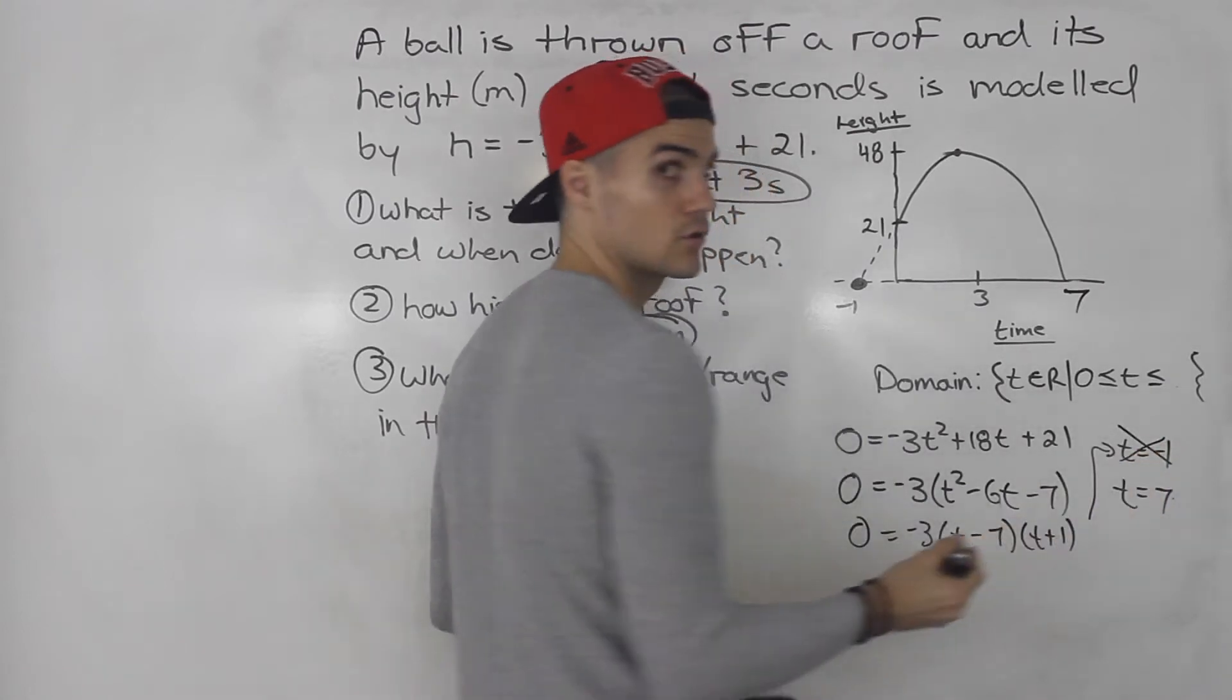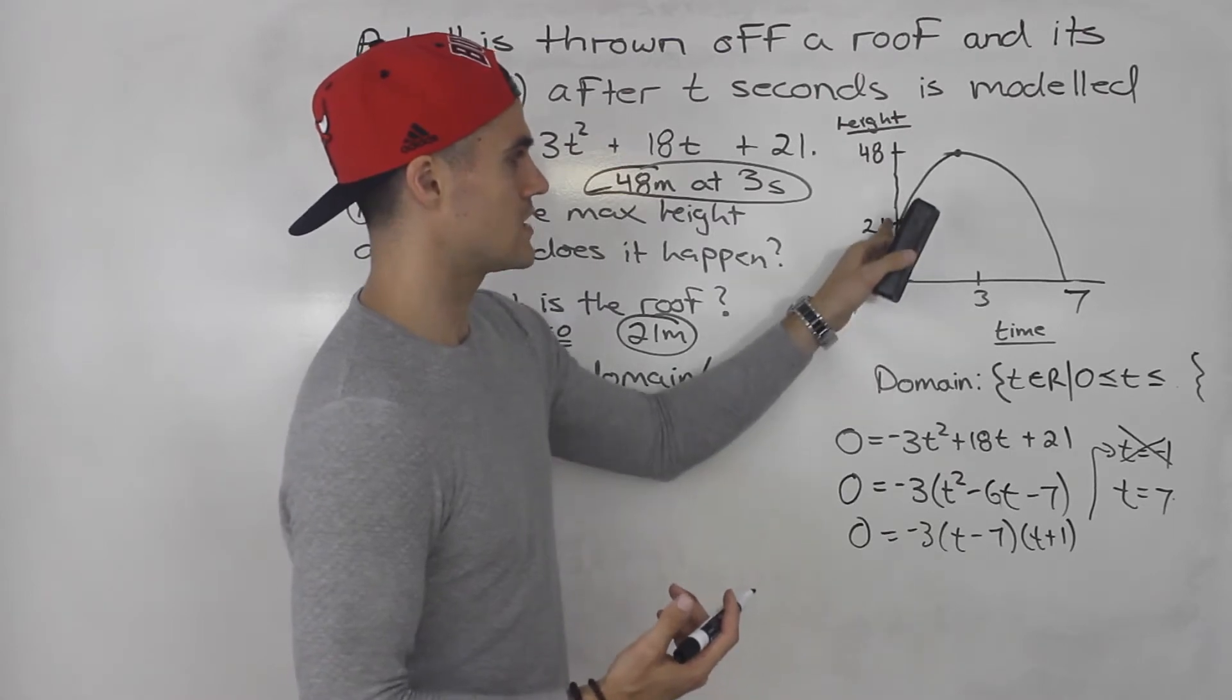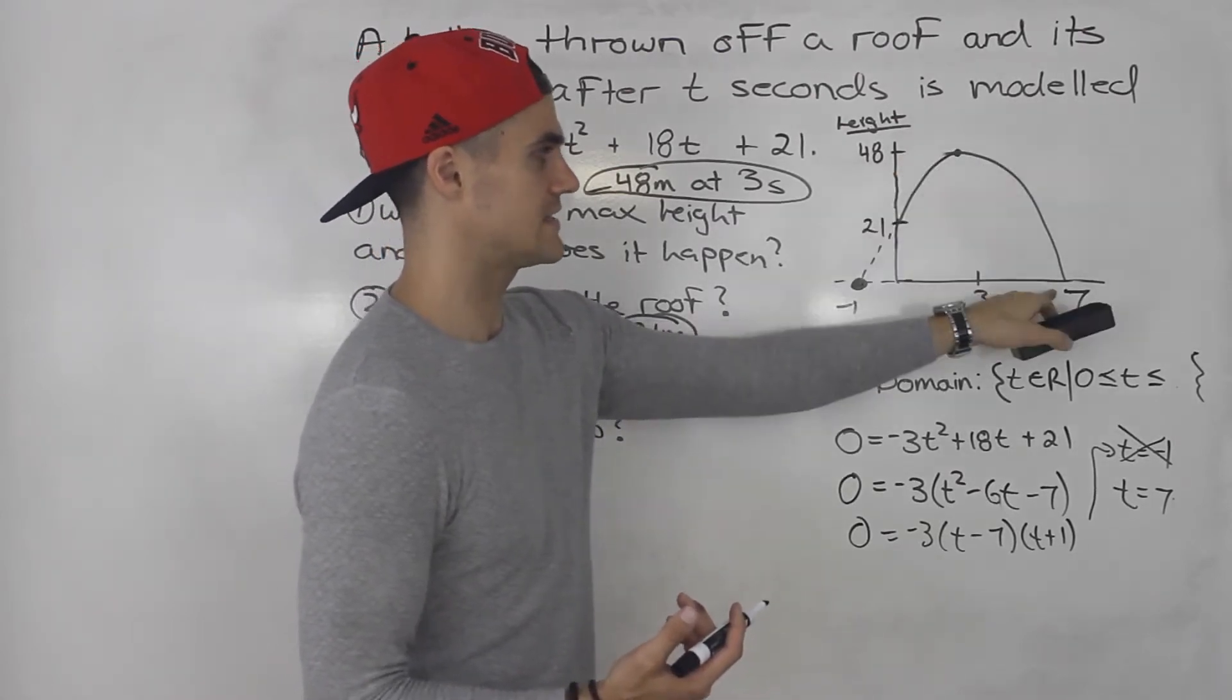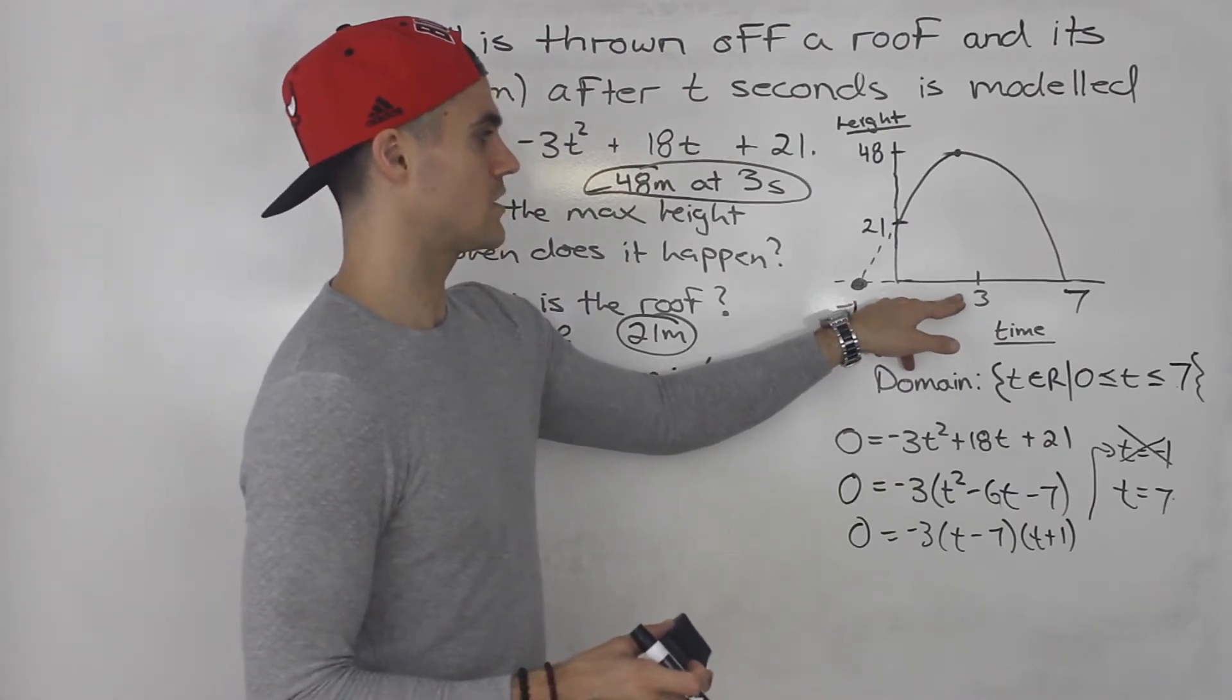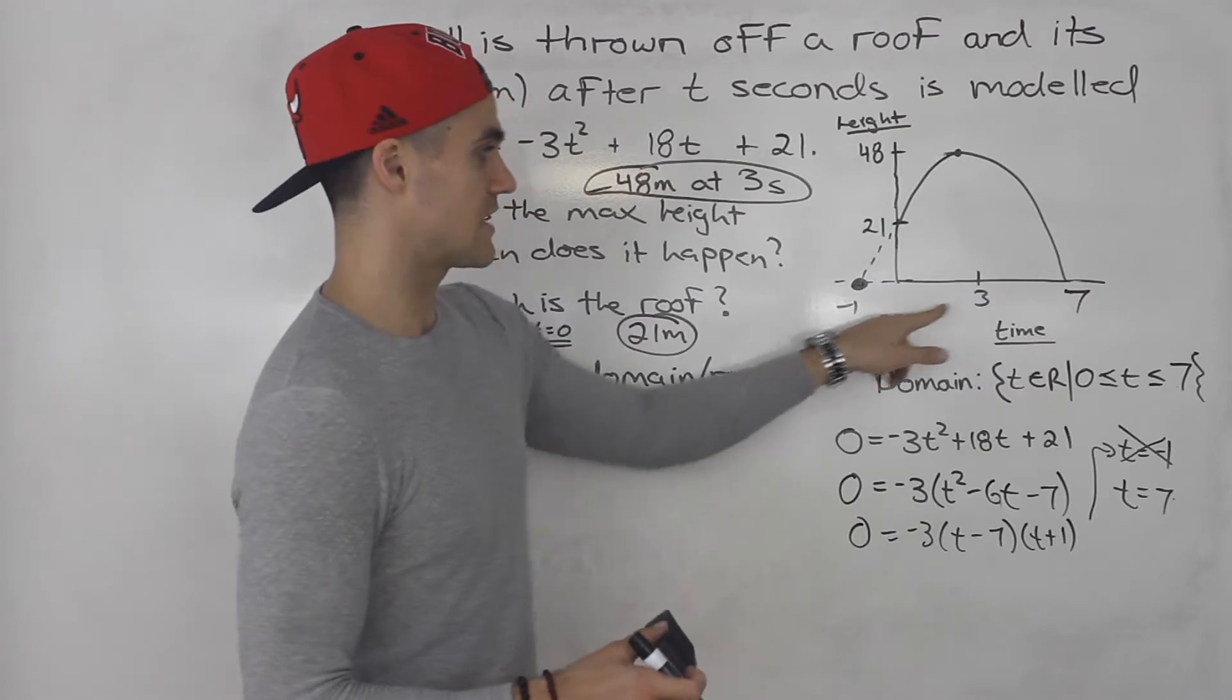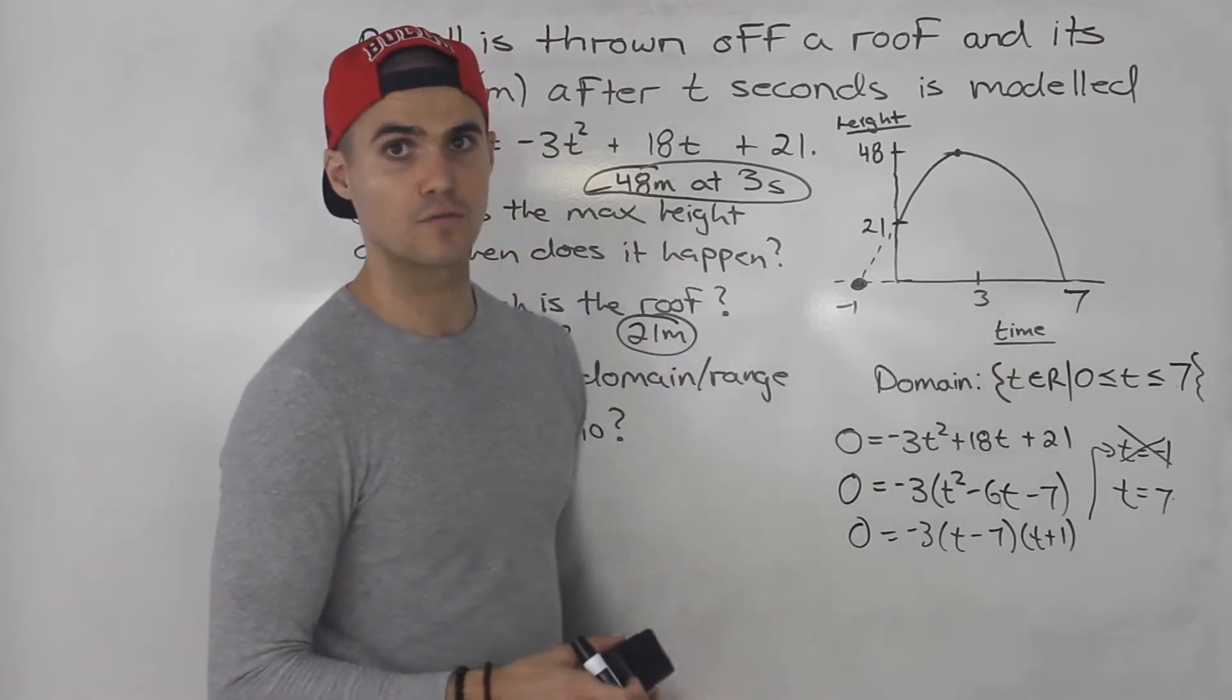But again, the negative you would just ignore. You can't have a negative time. So from the time it's thrown, the ball reaches a max height at 3 seconds of 48 meters and then it hits the ground at 7 seconds. And it makes sense that it reaches a max height of 3 because the intercepts are negative 1 and 7. So notice that 3 is the halfway mark, right? The distance from negative 1 to 3 is 4. The distance from 3 to 7 is 4 as well.